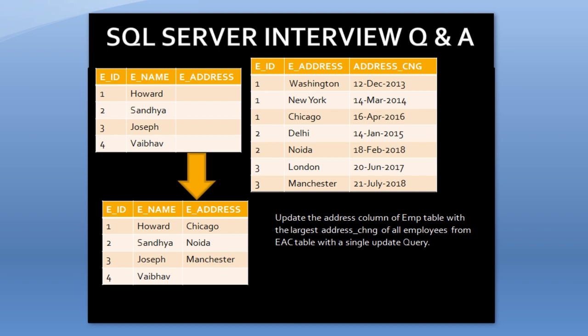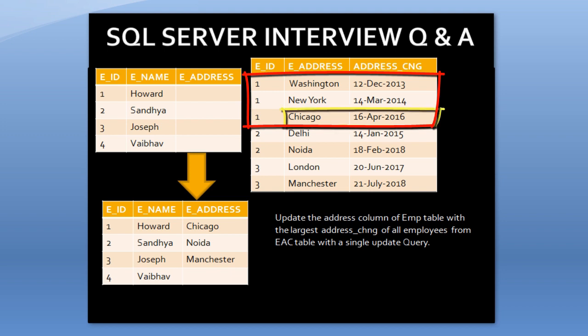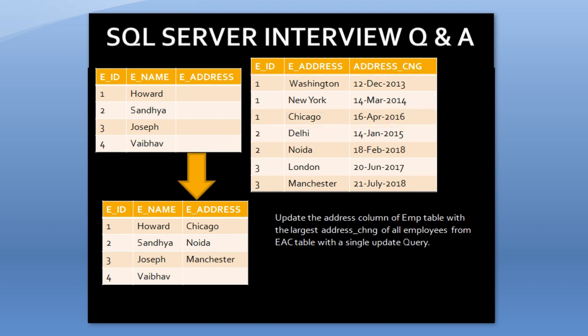For employee ID 1, employee name is Howard. We have three rows in the employee address change table: Washington, New York, and Chicago, with address change dates of 12th December 2013, 14th March 2014, and 16th April 2016. The 16th of April 2016 is the maximum date, so the address Chicago will be picked and updated. In our output table, employee ID 1 shows Howard with address Chicago.